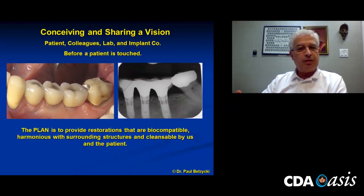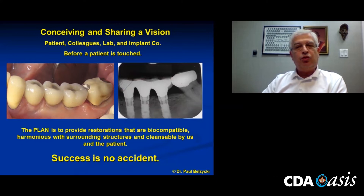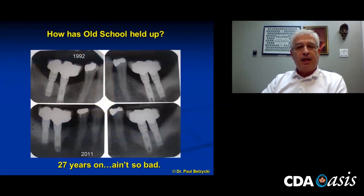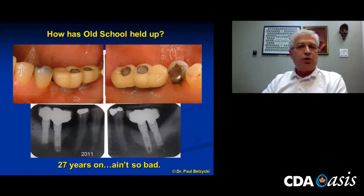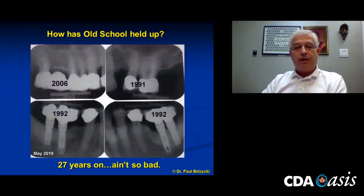Success is no accident. You don't back into it at the end of a case and say it turned out perfectly — you have to plan for it ahead of time. I showed some techniques and how I developed them from conventional crown and bridge, and I showed how old school has held up. This was a case that survived some 27 years, without really involving high tech, because at that time it wasn't there. But over the course of 27 years, we've got these four implants in the lower arch and everything continues to hold up.